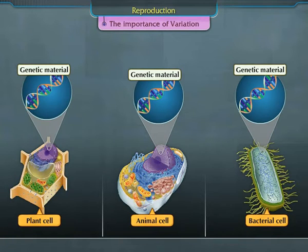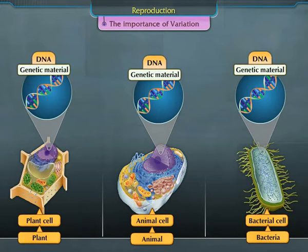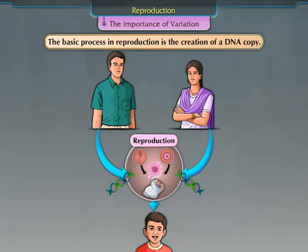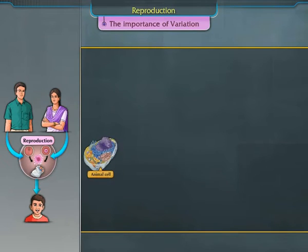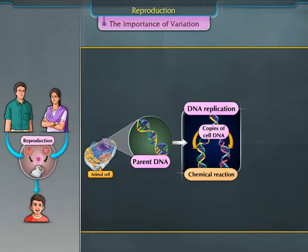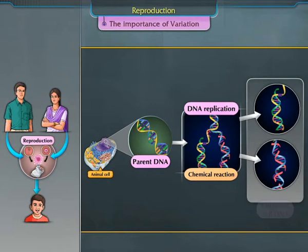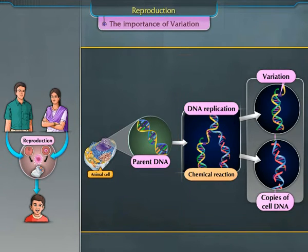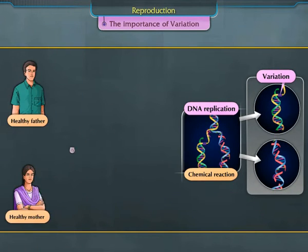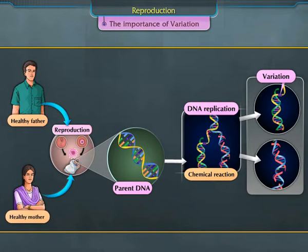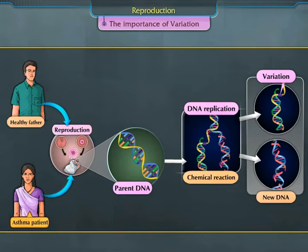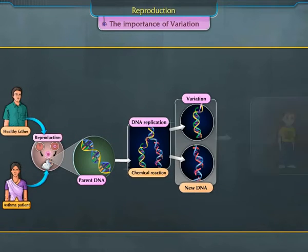The genetic material in all living organisms is organised in the form of DNA, or deoxyribonucleic acid. The basic process in reproduction is the creation of a DNA copy. Cells use chemical reactions to create copies of their DNA. During this process, there is a possibility of some form of variation since no biochemical reaction can be absolutely reliable. Hence, the DNA copies generated are similar but not identical to the original parent DNA. Some of these variations can be so drastic that the new DNA cannot adjust to the new cellular machinery it inherits, while others can actually prove to be beneficial for the new copy of DNA.